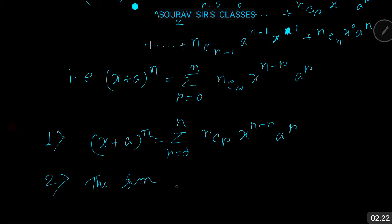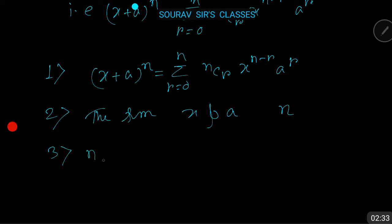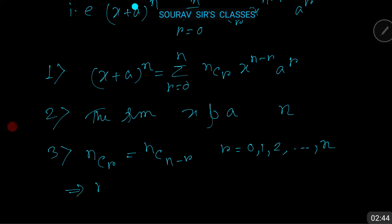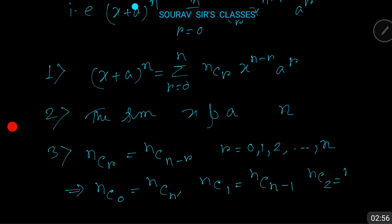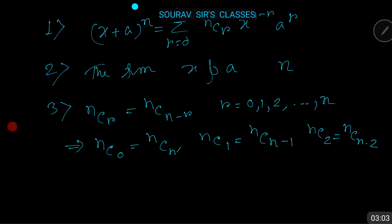Property number two: the sum of the indices of x and a in each term is n. Property number three: nCr = nC(n-r), where r = 0, 1, 2, ..., n. This implies nC0 = nCn, nC1 = nC(n-1), nC2 = nC(n-2), and so on. The coefficients equidistant from the beginning and end are equal; these are known as the binomial coefficients.